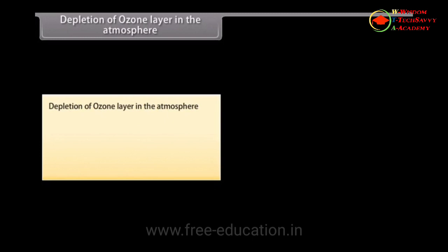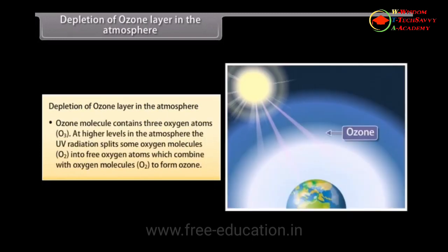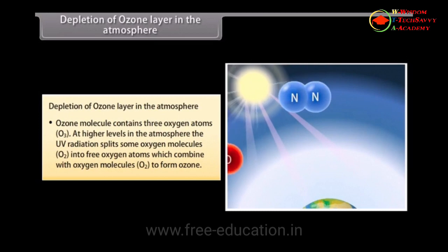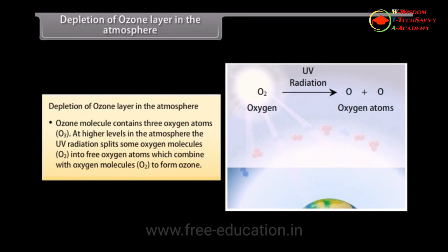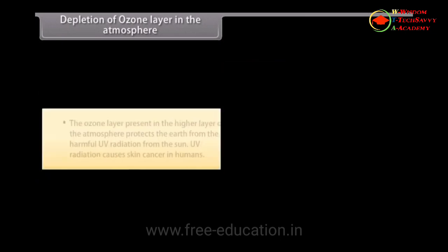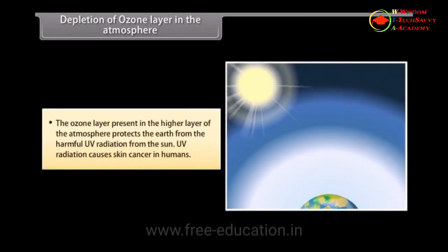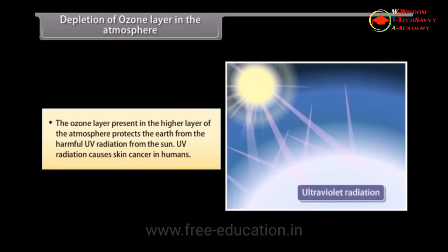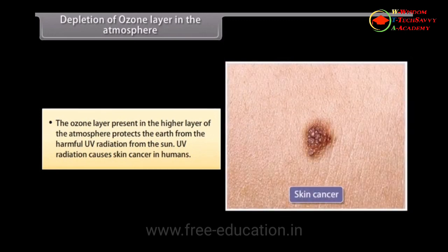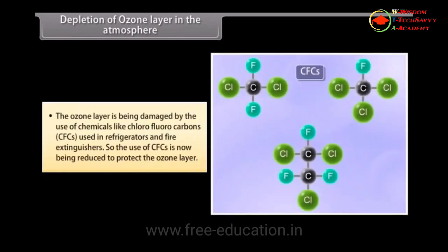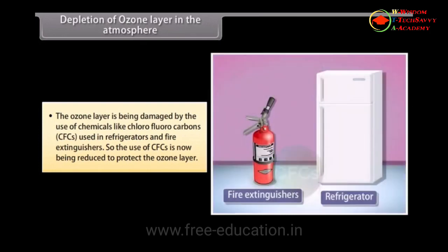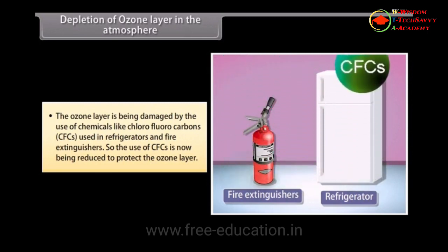Depletion of the ozone layer: The ozone molecule contains three oxygen atoms (O3). UV radiation splits oxygen molecules (O2) into free oxygen atoms, which combine with O2 to form ozone. The ozone layer protects the Earth from harmful UV radiation from the Sun. UV radiation causes skin cancer in humans. The ozone layer is being damaged by chemicals like chlorofluorocarbons (CFCs) used in refrigerators and fire extinguishers, so the use of CFCs is now being reduced.